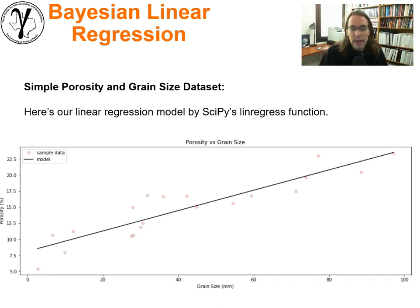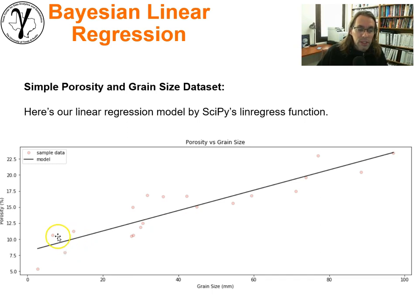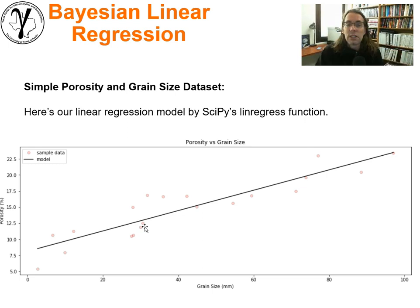We can go ahead and run SciPy's linear regression — we could also use scikit-learn — and fit our model. That's our model right there. If we were to calculate all of the residuals, we would find that for the training data we could not fit a model that does a better job of minimizing the residual sum of squares, the sum of squares of those errors.